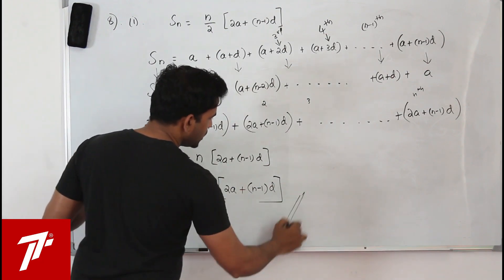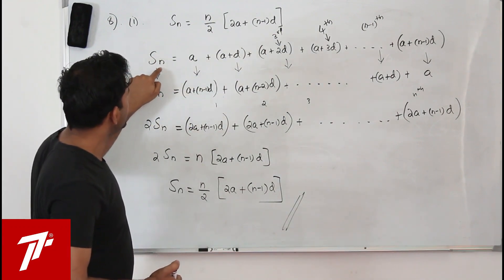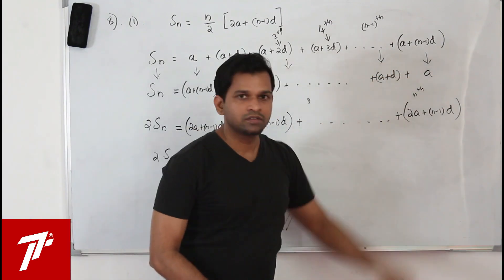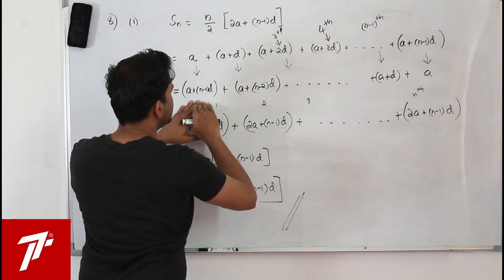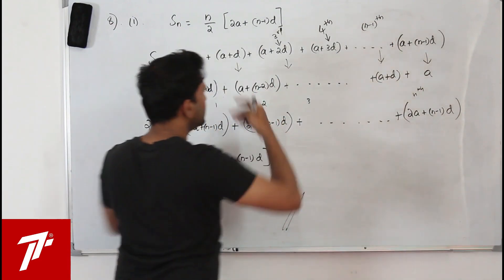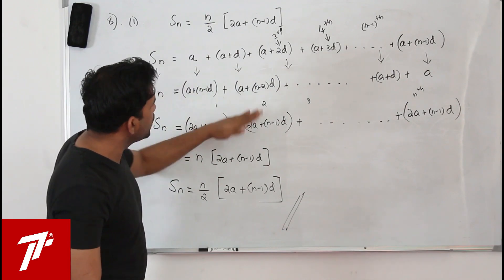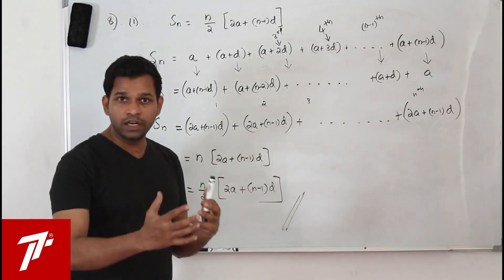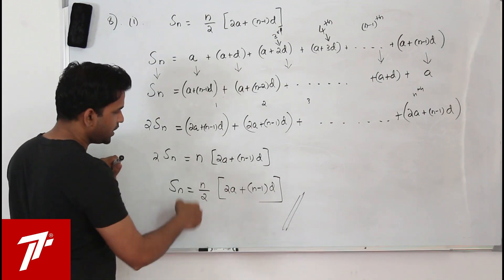To recap: write the sum of n terms with first term a and common difference d, then flip the series so the last term comes first. Add the corresponding terms — every pair gives 2a plus n minus 1 into d. There are n such equal terms, so 2Sn equals n times 2a plus n minus 1 into d. Divide by 2 to get Sn.